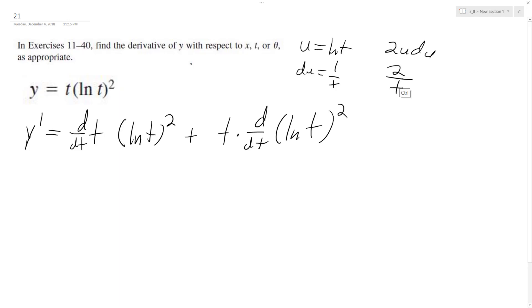We'll have 2 natural log of t times 1 over t. That's the derivative of the natural log of t squared. So we'll have y prime is equal to 1 times natural log of t squared plus t times 2 times 1 over t times natural log of t squared.